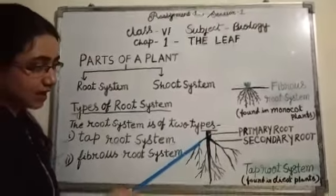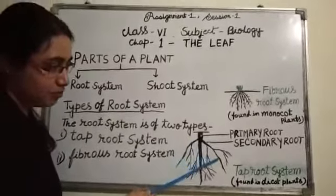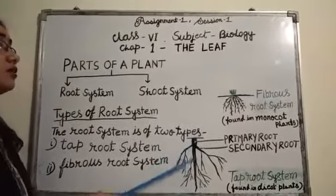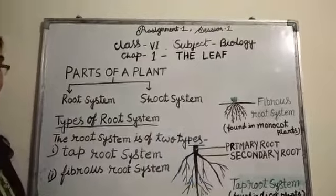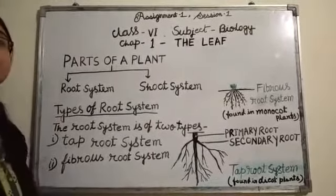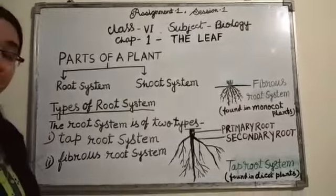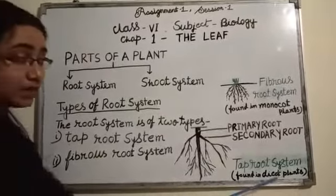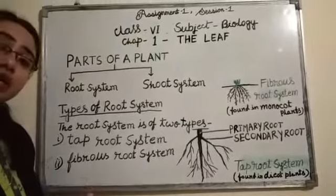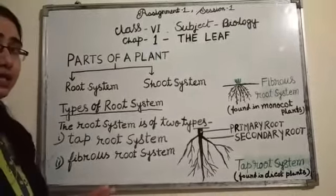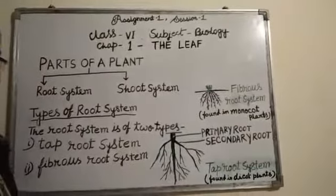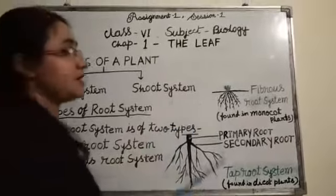These are the side branches of primary root called secondary roots. This type of root system is found in dicot plants such as pea, gram, and beans. Plants having two cotyledons in their seeds are called dicot plants. Observe the next diagram.